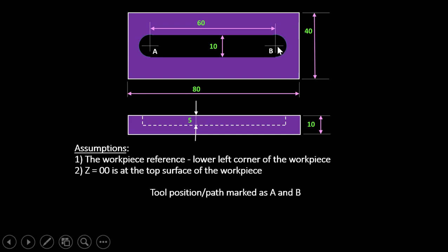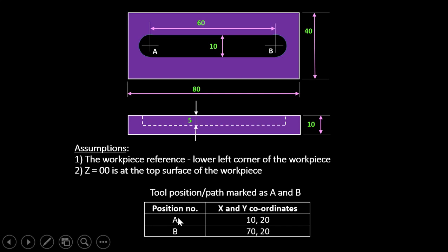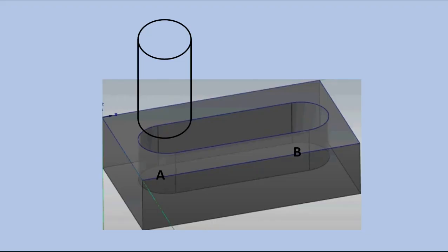The tabulation shows position A at X10, Y20 and position B at X70, Y20. We have found the X and Y coordinates of both positions. Now we will show the machining process in the form of an animation so the steps are clear before we start writing the program.